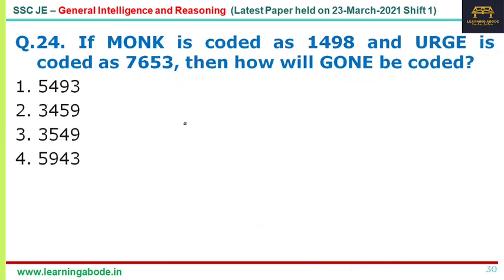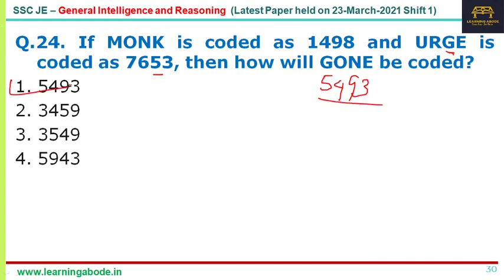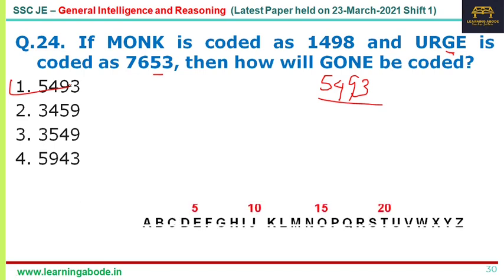Question 24 is a very easy coding-decoding question. If MONK is coded as 1498 and LARGE is coded as 7653, then for GONE: G is coded as 5, O as 4, N as 9, E as 3 — giving 5493. Answer option 1, 5493, is the answer for question 24.